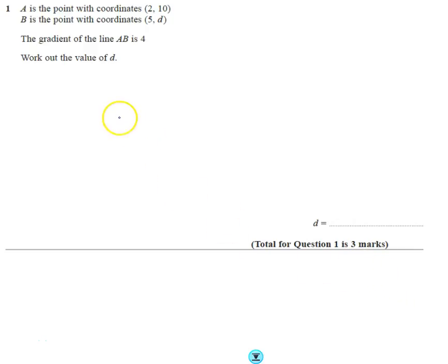Question number one. It gives us the coordinates of two points, although in this case we use an unknown for the y-coordinate of B. It tells us what the gradient is, and we're going to work backwards to find d.